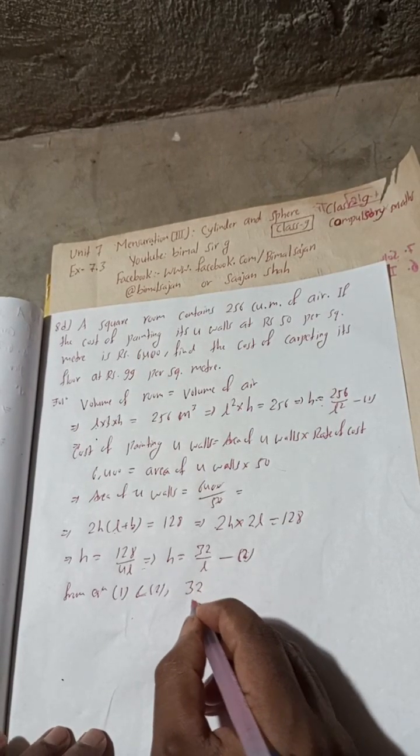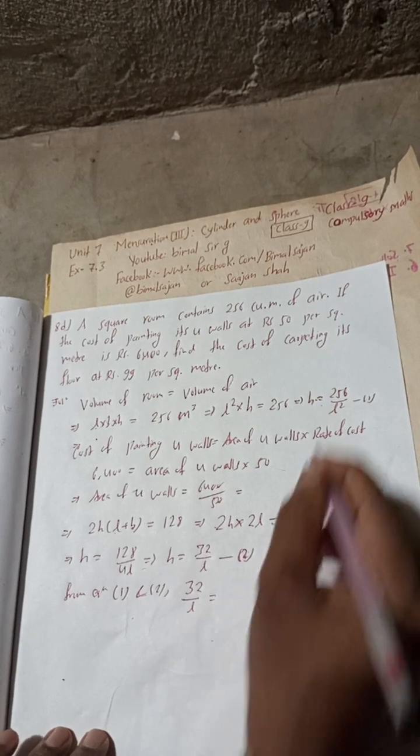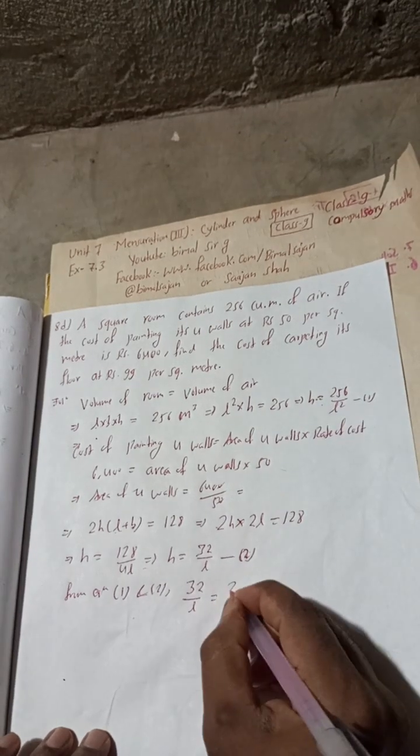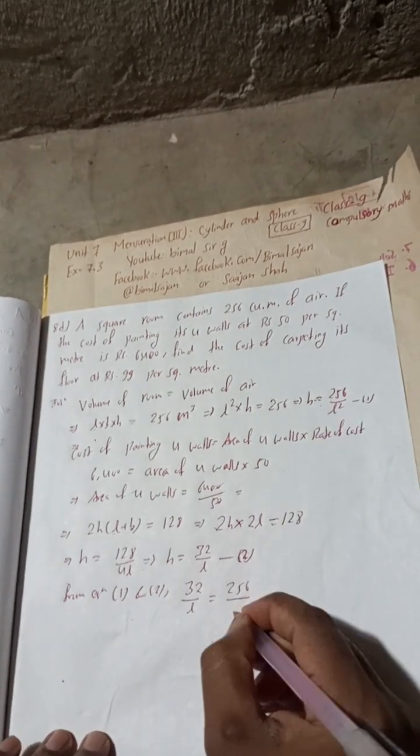So 32/L = 256/L². One L from L² cancels with the L in the denominator on the left side, leaving L = 256/32.